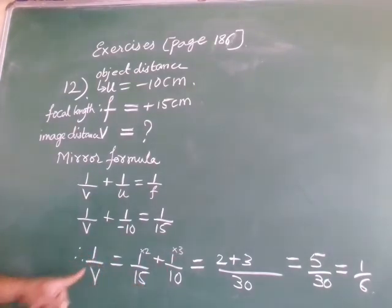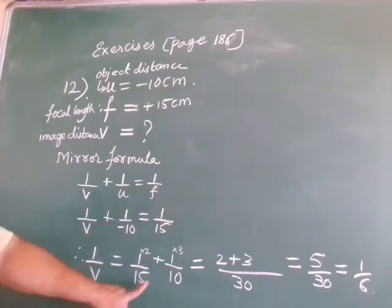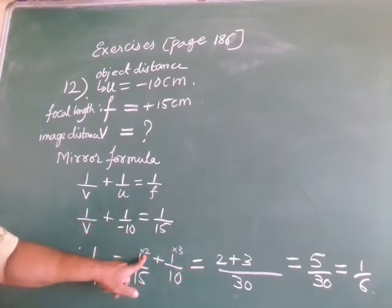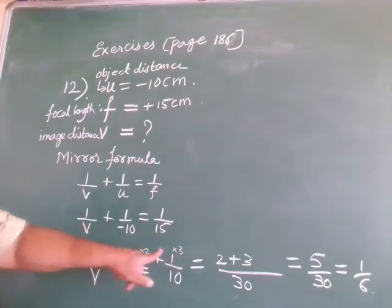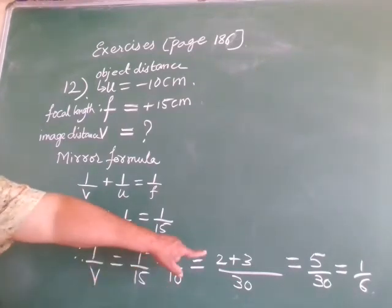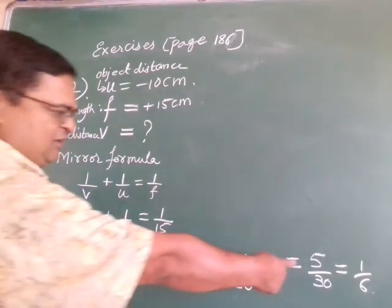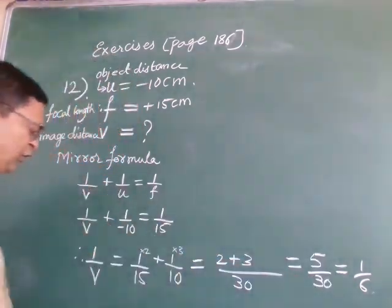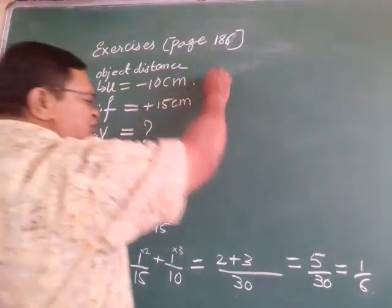The LCM of 15 and 10 is 30. Multiplying: 1/15 gives 2/30, and 1/10 gives 3/30. Adding gives 5/30, which simplifies to 1/6. Therefore 1 upon v equals 1 upon 6, so v equals 6 centimeters.